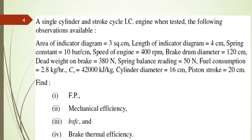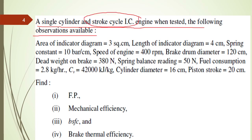Here is the data: a single cylinder IC engine was tested and the following observations are available. Whether it is a 2-stroke or 4-stroke engine is not mentioned, and whether it is a petrol or diesel engine is also not mentioned, but it is definitely a single cylinder engine. Area of indicator diagram is given as 3 square centimeters. Length of the indicator diagram is 4 centimeters. Spring constant is 10 bar per centimeter.